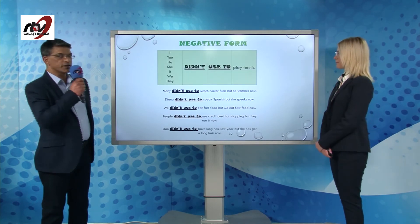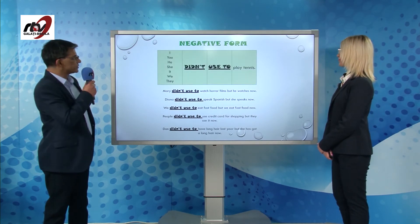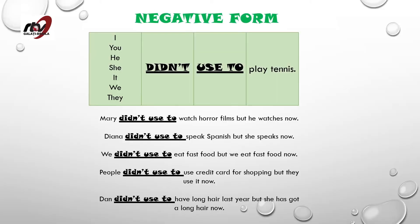Similarly, the negative form: 'I didn't use to play tennis. You didn't use to play tennis. He didn't use to play tennis. She didn't use to play tennis. We didn't use to play tennis. They didn't use to play tennis.'